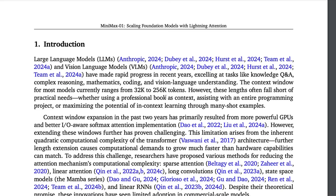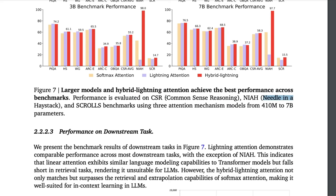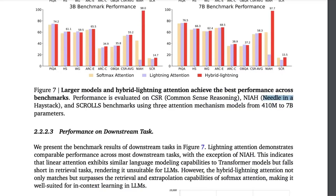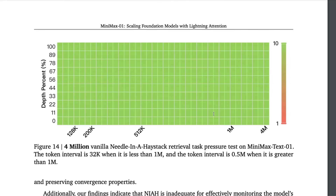With this new architecture, the model can scale LLMs up to 4 million tokens. They also performed the needle-in-a-haystack experiment, finding that even with 4 billion tokens the model handles retrieval well. They incrementally increased the context window and checked for retrieval issues. As you can see here, even with a longer context, there is no problem with the depth percentage the model can retrieve.